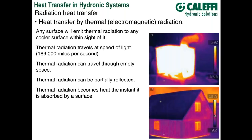Thermal radiation becomes heat the instant it's absorbed at a surface. Sunlight traveling 93 million miles hits a driveway and at that moment the radiation becomes heat stored within that material. The thermal images on the right show a wood stove — cranked up, high temperature on the stove body, a bit less on the flue. The building shown below is the same one we looked at earlier, and this image is created by thermal radiation leaving all the surfaces visible in that image.